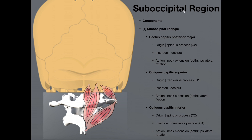Another useful piece of information is that all of these structures are deep to the splenius muscles. Recall from the videos on the deep muscles of the back and neck, we covered the splenius capitis and splenius cervicus. All the muscles in the suboccipital region are going to be deep to the splenius capitis, so you would not be able to palpate or see these without pulling off all the superficial muscles, which include the trapezius and then the splenius capitis and possibly splenius cervicus.